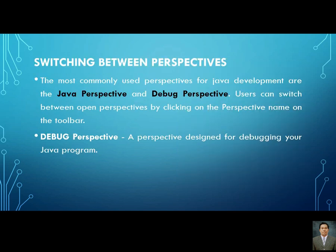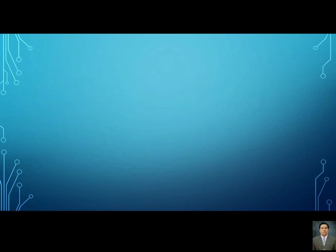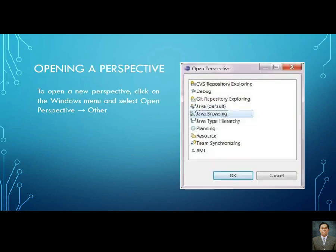To switch between perspectives — such as the Java perspective and the Debug perspective — you can click on the perspective name on the toolbar. Just go to the Window menu, select Open Perspective, and you can change the perspective of your IDE.